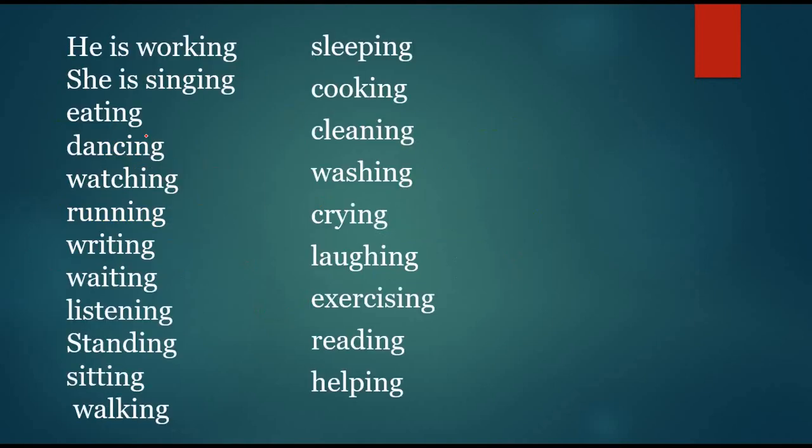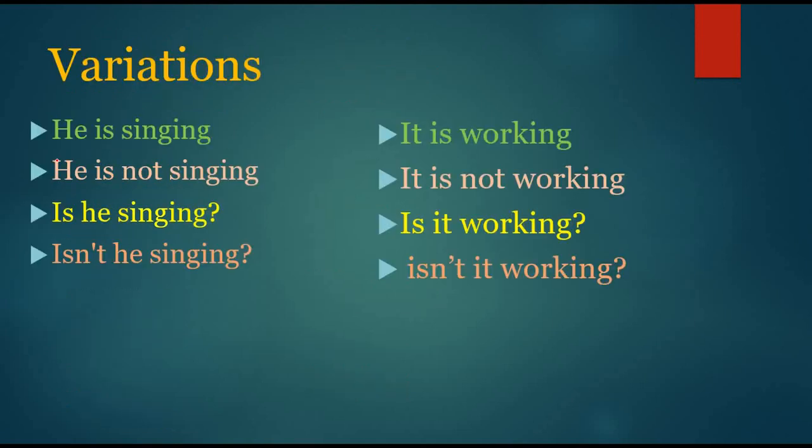Once you make sentences, then you should practice variations - four important variations for each and every sentence. And for 'ing' form also you can use that: he is working, she is working, he is eating, she is eating, he is dancing, it is running, she is writing, she is waiting, she is listening, he is listening, Rama is standing, Sita is standing, sitting. Like this, you can collect many 'ing' forms and make simple sentences like this, and try to practice variation for each and every sentence.